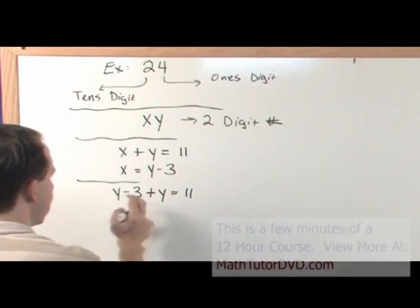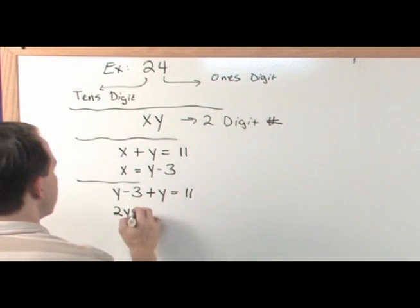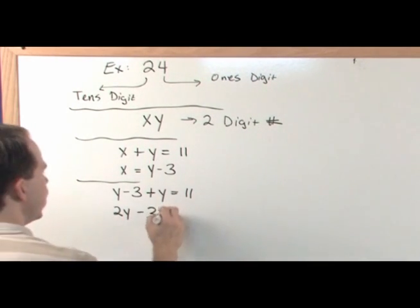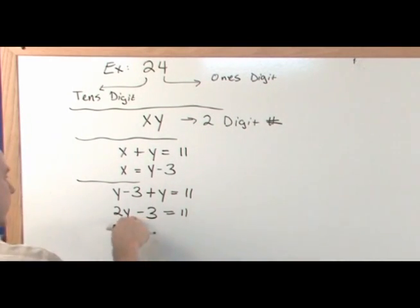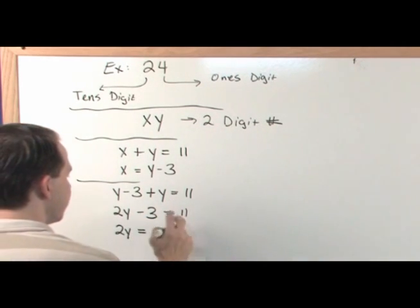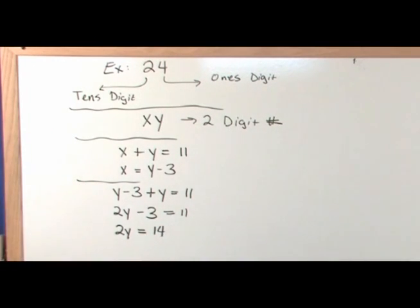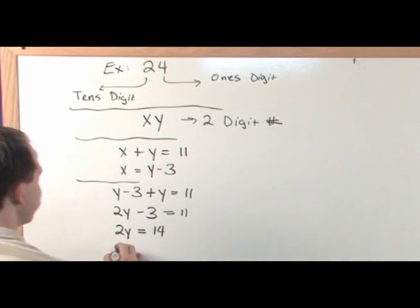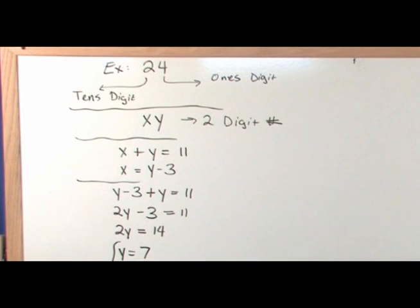Combining like terms, y plus y gives two y, so we have two y minus three equals 11. Moving the three over by adding three to both sides gives two y equals 14. Dividing both sides by two, y equals 7.